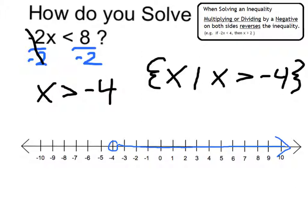For example, if we were to put in negative 1, which is a value greater than negative 4, negative 2 times negative 1 is positive 2, which is less than 8. So anything on that line would be a true value.